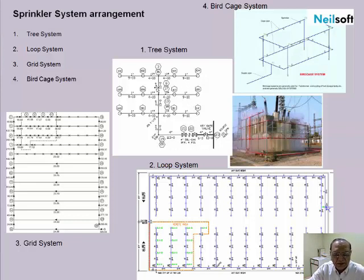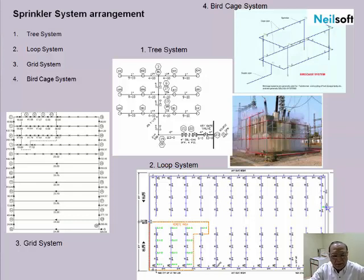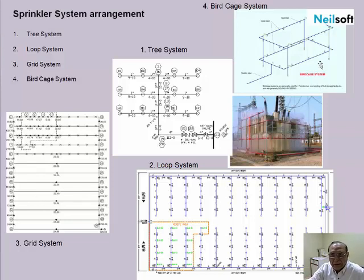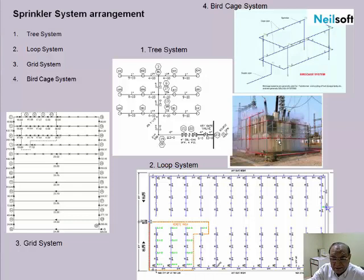This is the explanatory picture showing how tree system sprinklers are arranged. This is the loop system — you can see a loop of pipe from which branches are taken. The other arrangement is the grid system, where you can see how the sprinklers are arranged in a grid. And this one is known as the bird cage system — the sprinklers are arranged in the form of a cage. The best example is a transformer protected by a cage system using high-velocity water spray to extinguish fire.